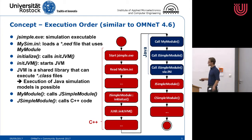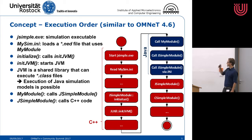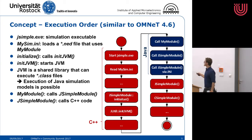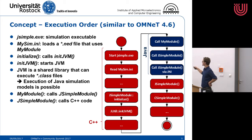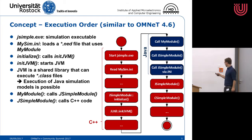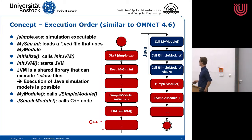Simply said, the execution of Java simulation models is possible. After the JVM is started and initialized, we have the constructor of the Java simulation module — in this case MyModule — which is called. As shown on the last slide, this was derived from JSimpleModule, so the constructor of MyModule calls the super constructor, which is JSimpleModule. At this point, since JSimpleModule in Java is only a wrapper for the C++ equivalent, there is a callback to C++ which is simply a Java native call.